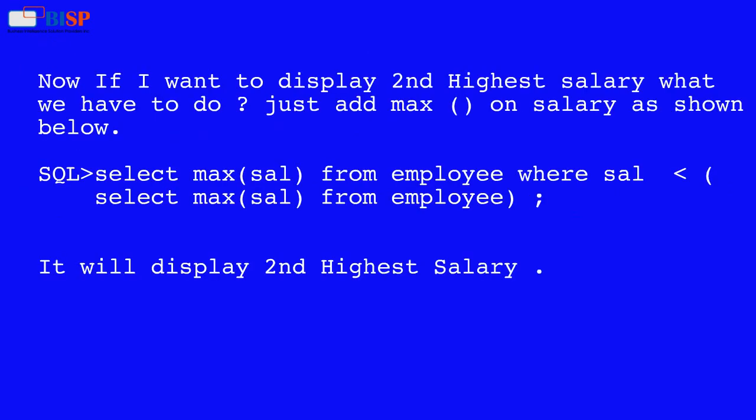Now if I want to display the second highest salary, just add the MAX function on salary as shown below: SELECT MAX(salary) FROM employee WHERE salary less than SELECT MAX(salary) FROM employee. This will display the second highest salary.